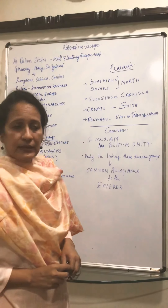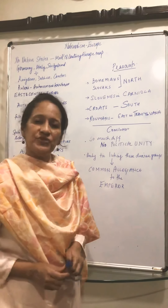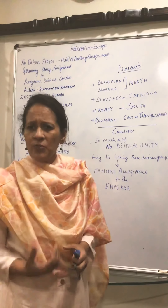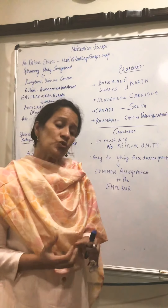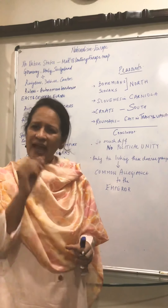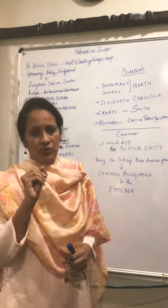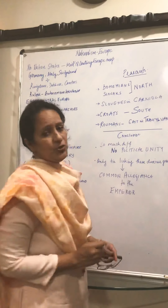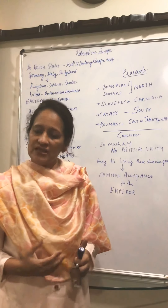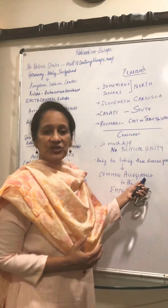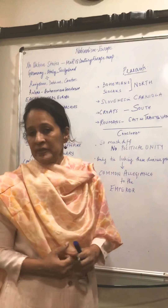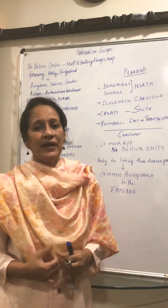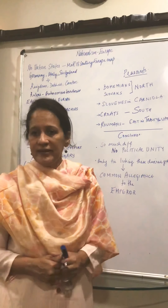So, with so much diversity and so many differences, political unity was naturally not promoted among them. But these diverse groups of people had one link that tied them together - their common allegiance, meaning loyalty and support, to the emperor. This is your 5-mark or 3-mark answer for this question, and I hope it has become a little easier for you all. Happy learning!